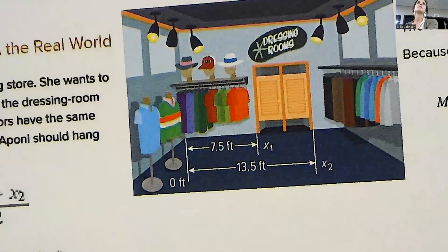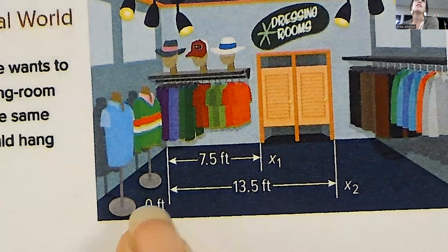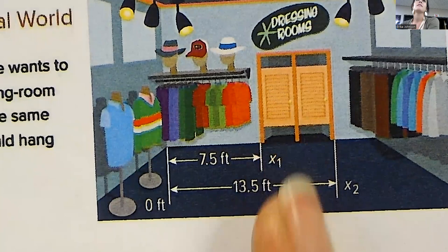So it tells us, let me zoom in on this, tells us that this is at 7.5 and at 13.5. And we want to find halfway in between that.